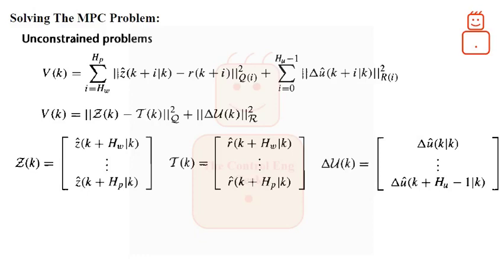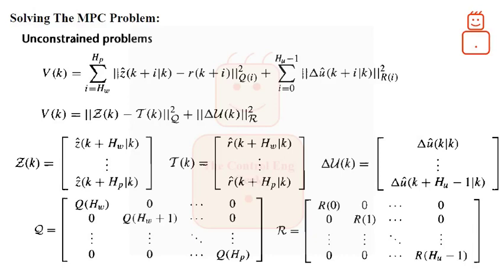Also, we have defined the following two matrices. Sigma is the diagonal matrix of the weight Q. And R is a similar matrix but for the weight on the control action change. At this point, please, observe the length or the size of each of these quantities which depends on the state or control prediction horizons HP and HU.